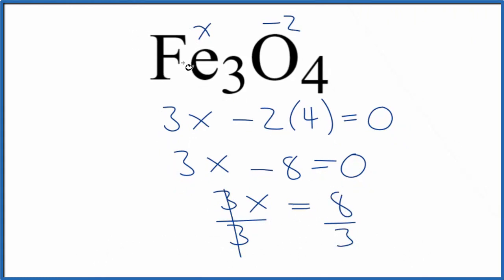So the oxidation number on each iron here in Fe3O4, that's going to be a positive eight thirds. And that's kind of strange. How do we get a fractional oxidation number?